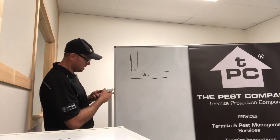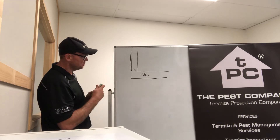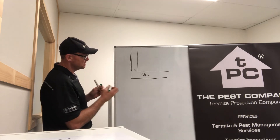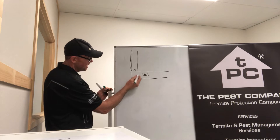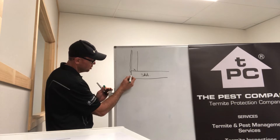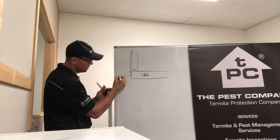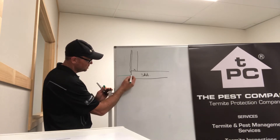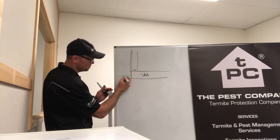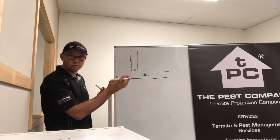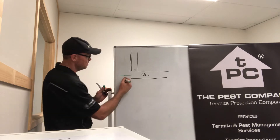Now let's look at the slab edge and how this works. We have our soil level here — for example, grass, pavers, concrete, whatever it may be.